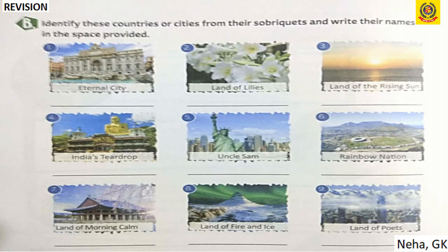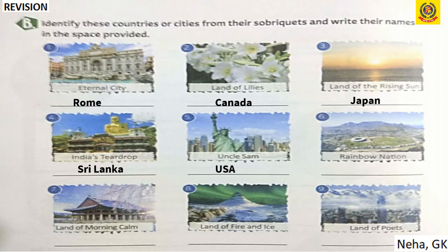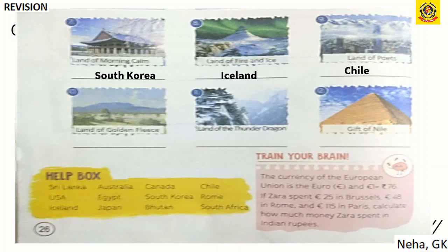Part B: Identify countries or cities from their sobriquets (nicknames). Eternal City — Rome; Land of Lilies — Canada; Land of the Rising Sun — Japan; India's Teardrop — Sri Lanka; Uncle Sam — USA; Rainbow Nation — South Africa; Land of Morning Calm — South Korea; Land of Fire and Ice — Iceland; Land of Poets — Chile; Land of the Golden Fleece — Australia; Land of the Thunder Dragon — Bhutan; Gift of the Nile — Egypt.